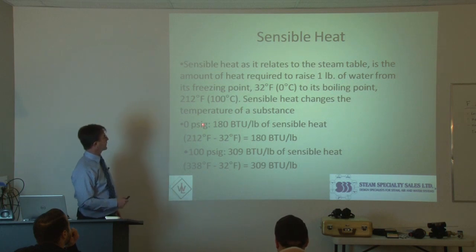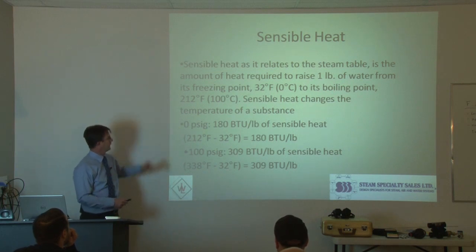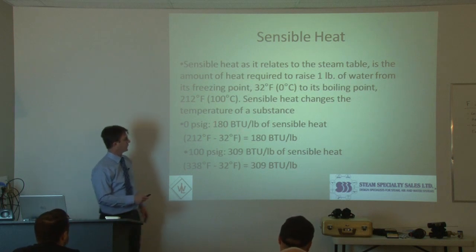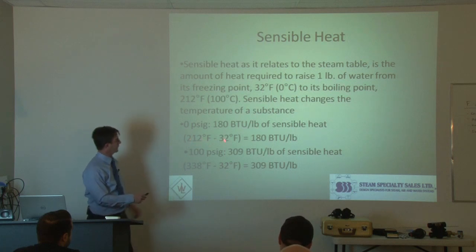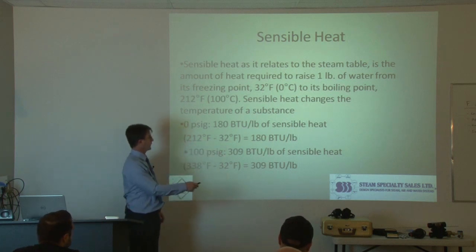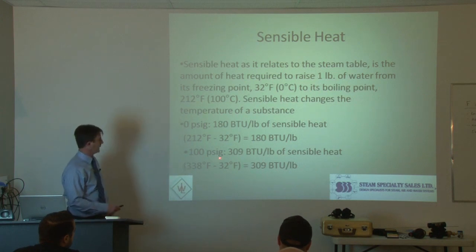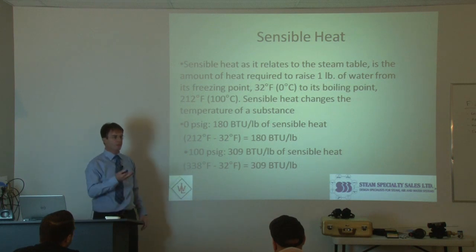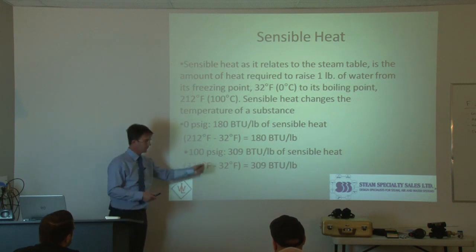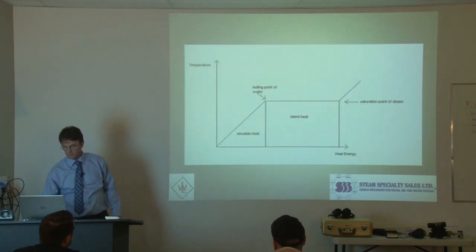Sensible heat changes the temperature of the substance. At 0 PSIG it is 180 BTUs per pound of sensible heat, and simply the temperature of boiling point, 212 minus the freezing point, gives you 180 BTUs per pound. And at 100 PSI, a lot more sensible heat, because it takes more energy to get to that higher temperature. So 338 minus 32 gives you roughly 309 BTUs per pound.